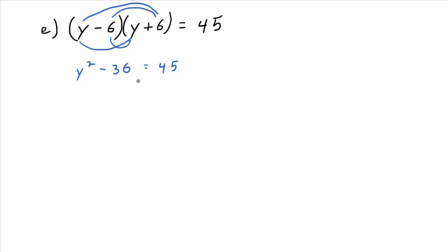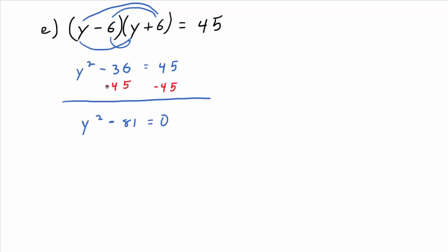So how could we solve this? There is no y term, so there are actually a couple of different options. You want to subtract 45 — that's one option. Get everything on one side, set it equal to zero. If we do that, we get y squared minus 81 equals zero — since minus 36 minus 45 is minus 81. Then we want to factor that left side, and we need products to use the zero product rule.